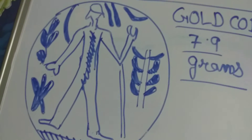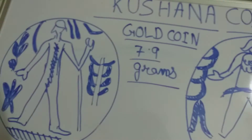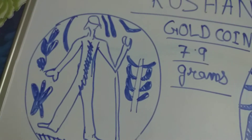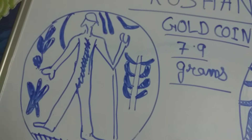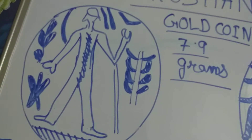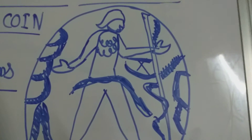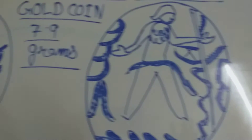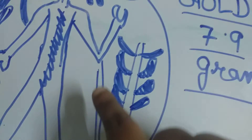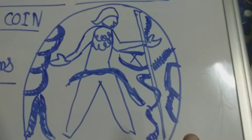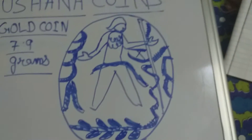You can see the coin — this is the front side and this is the back side. This appears to be the picture or structure of a king. This is also a structure of a king, and this stick or sword here may be a sword.